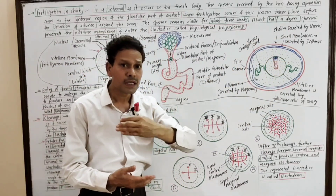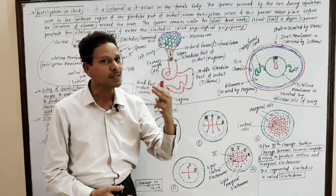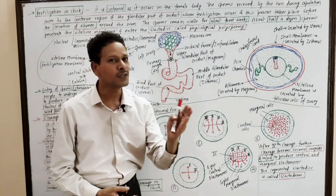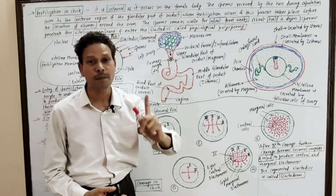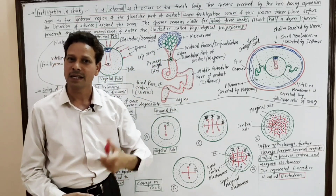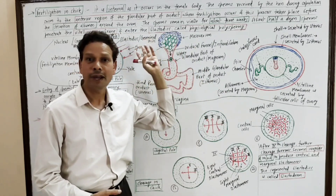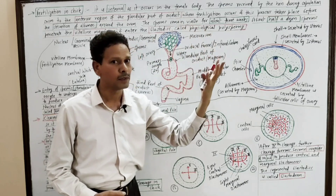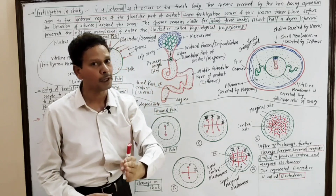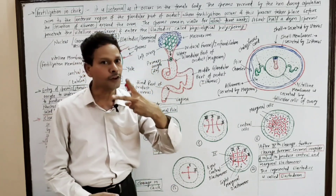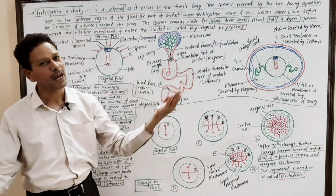The entry of several sperms inside the blastodisc is named physiological polyspermy. Not like in the case of human beings, where only one sperm enters — that is monospermia — but in case of chick, in case of hen, in case of birds, about half a dozen sperms enter. That is polyspermy — entry of several sperms — and this stimulates the process of maturation.